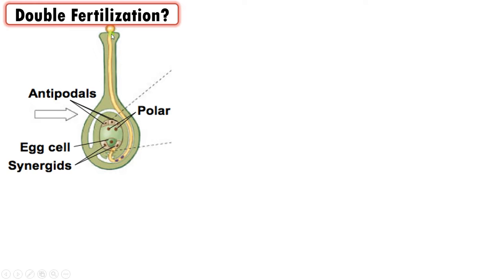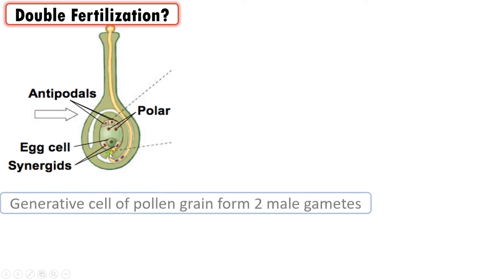In this image, as you can see, this pollen grain germinates and the pollen tube grows through the style and reaches the ovule. The generative cell of the pollen grain forms two male gametes. At maturity, the pollen grain has two unequal cells: a large vegetative cell which forms the pollen tube, and a small generative cell that forms these two gametes.